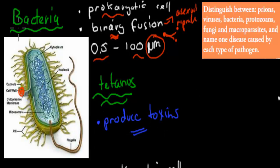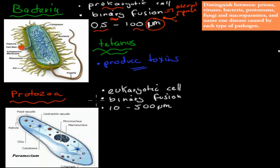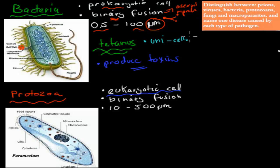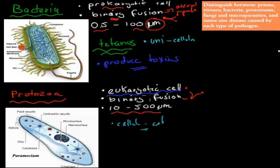Protozoa are similar to bacteria, but different. Bacteria are prokaryotic cells, whereas protozoa are eukaryotic cells — that means they're a bit more complex. You can see they have more organelles and more things inside compared to a prokaryotic cell. One similarity between bacteria and protozoa is they're both unicellular, which means both of them only have one cell. They also replicate by binary fission — asexual reproduction. They're actually a bit bigger than bacteria, on average between 10 and 500 micrometers. A disease they cause is, for example, malaria.